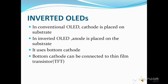Inverted OLED has an inverted architecture. In a conventional OLED, the cathode is placed on the substrate. In inverted OLED, the anode is placed on the substrate — that is, it uses a bottom cathode. The bottom cathode can be connected to the drain end of an N-channel thin film transistor.